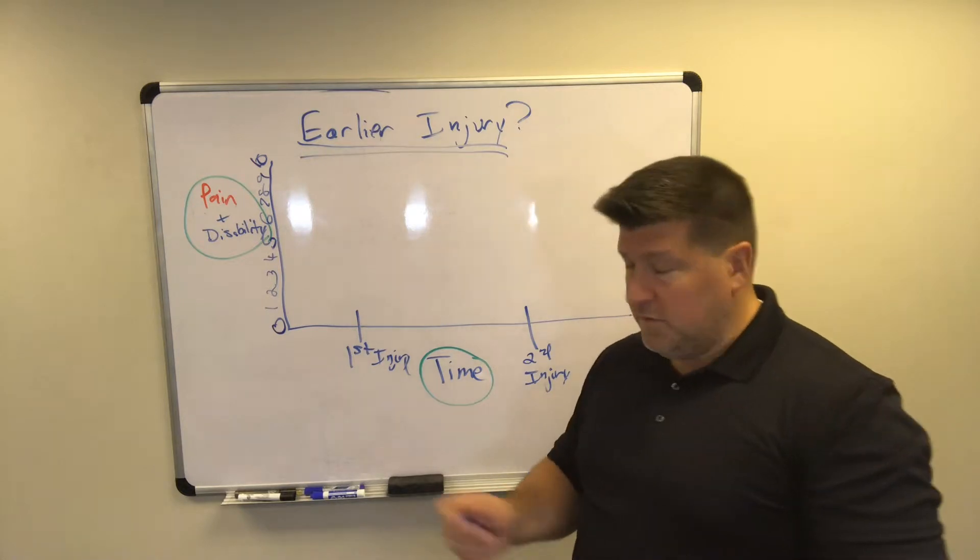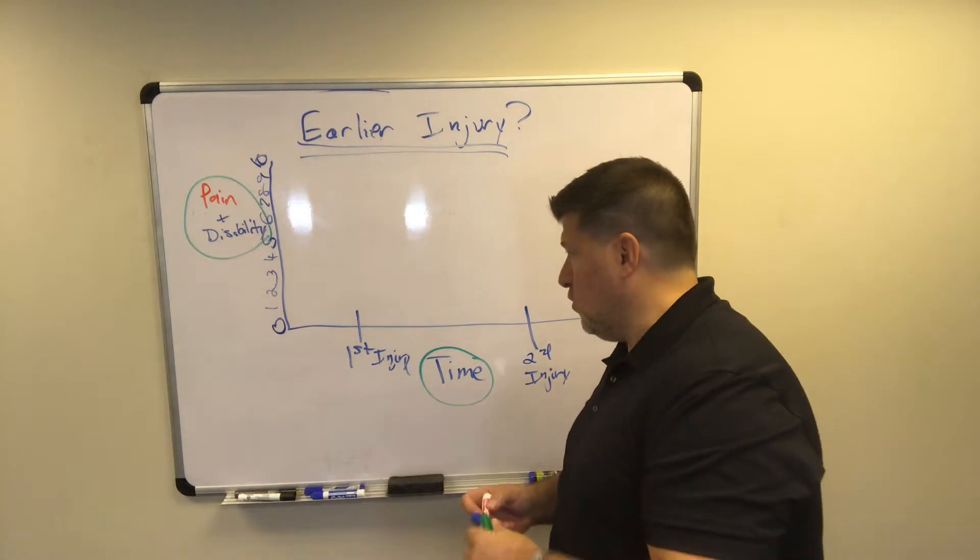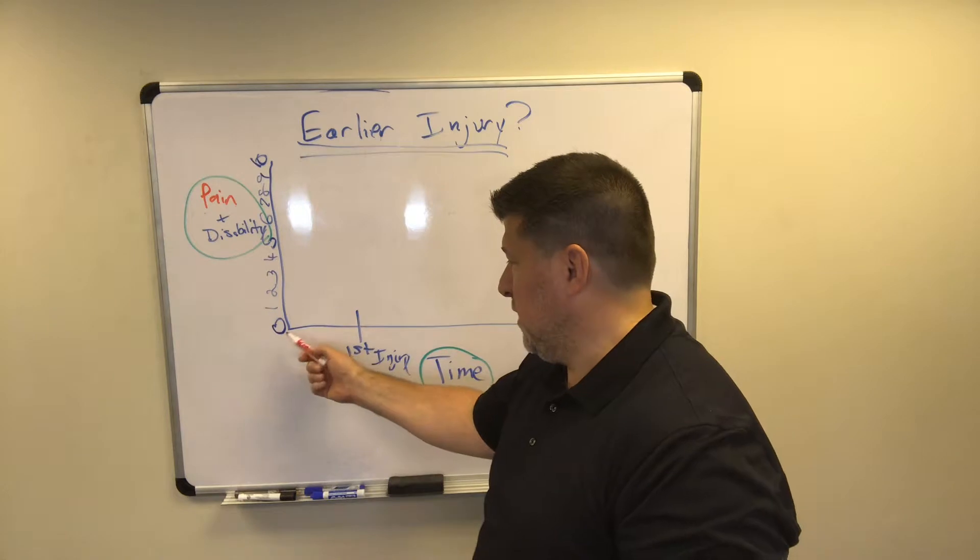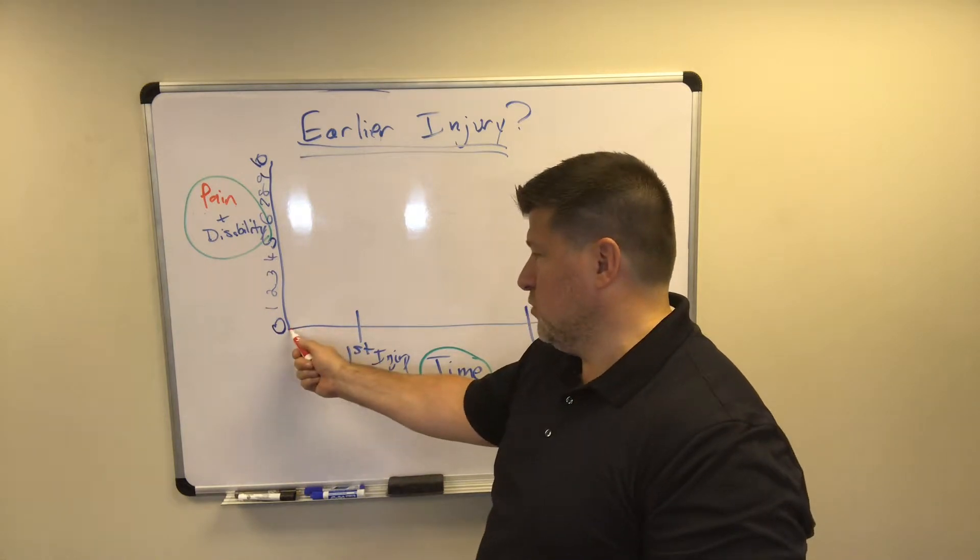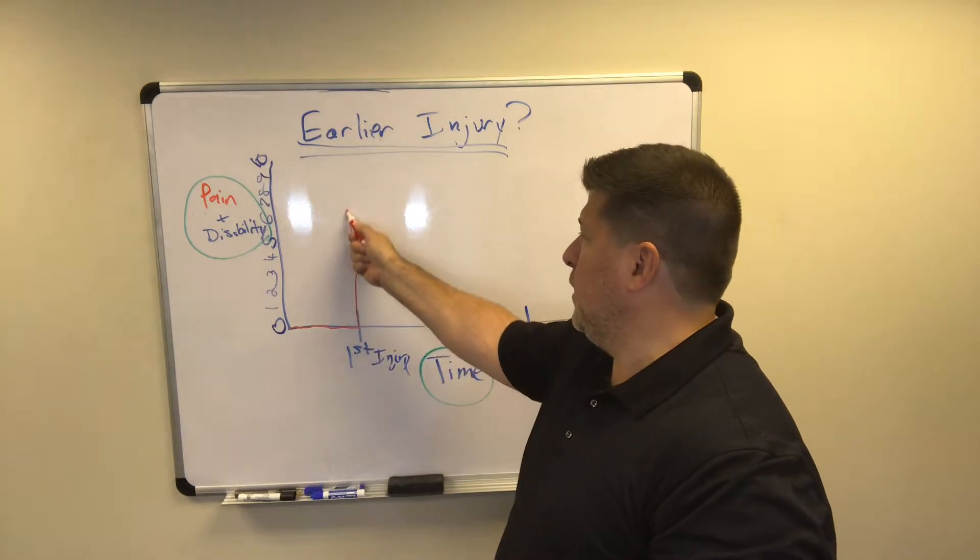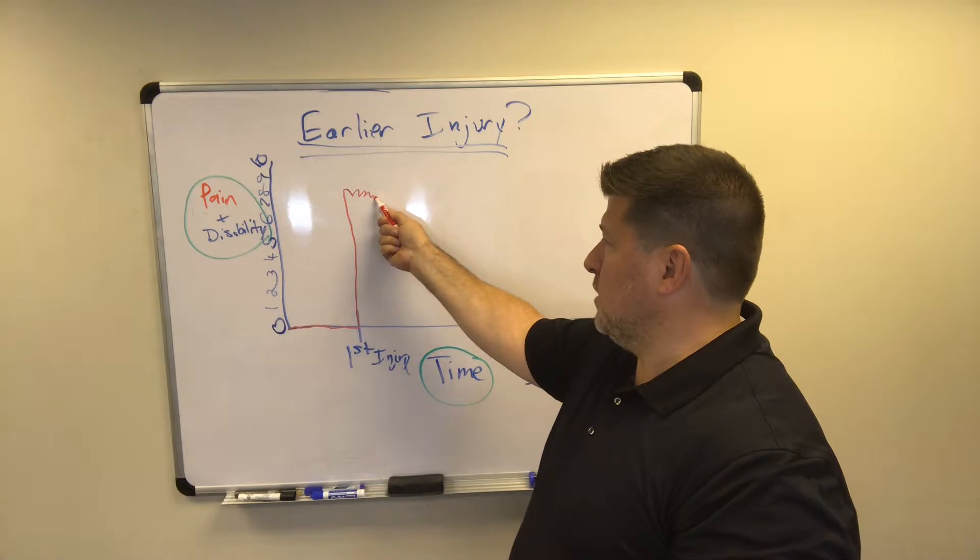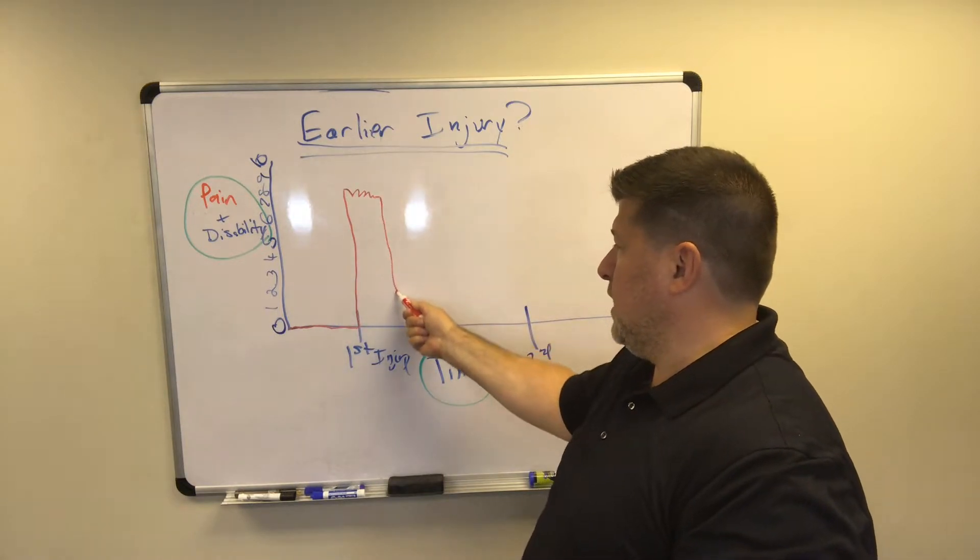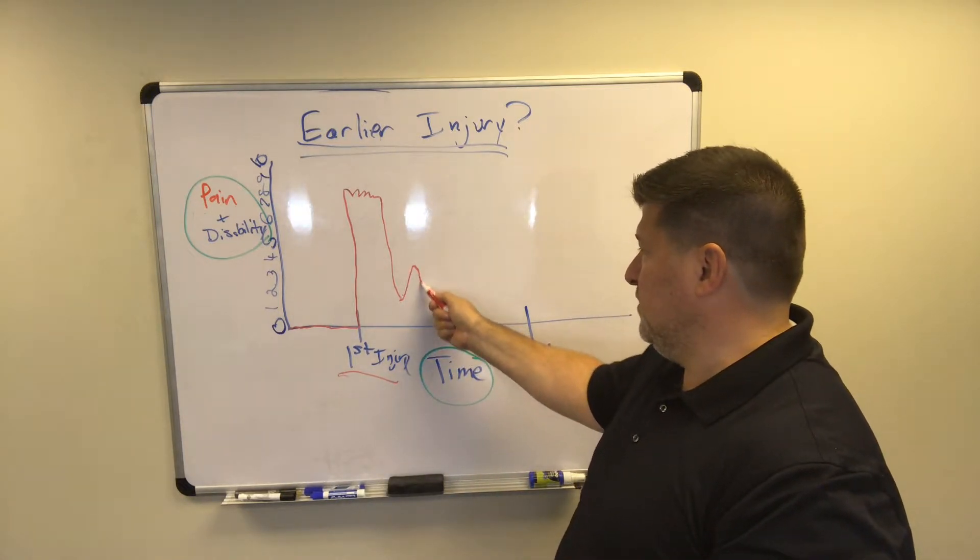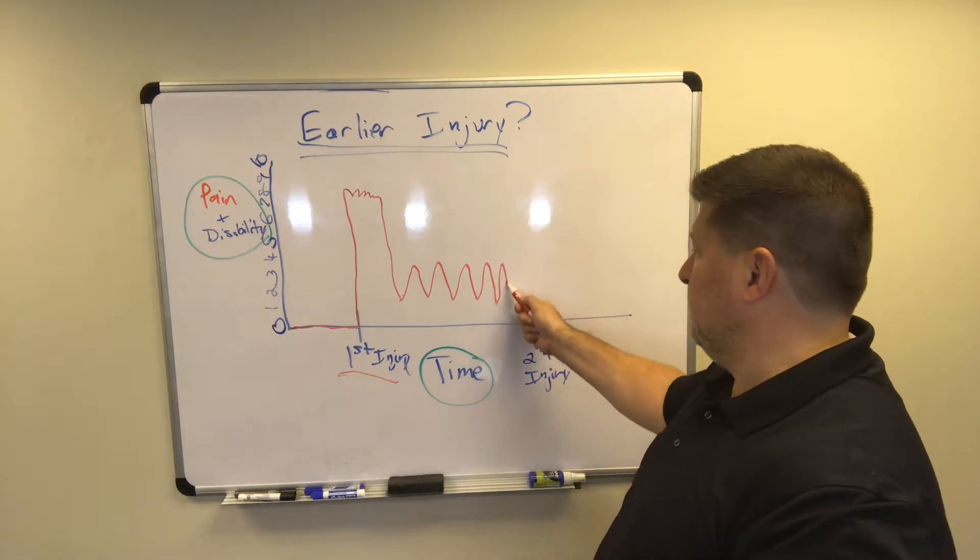So here's the situation our guy had. He had his first injury and his pain level before his first injury was 0. Then he had his first injury and his pain went up to like 8 out of 10. And so he had some treatment and then he had surgery on his back from the first accident and then he was living with pain between 1 and 3, depending on the day.